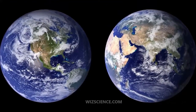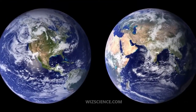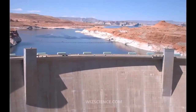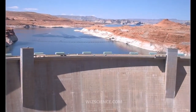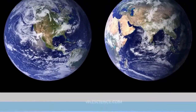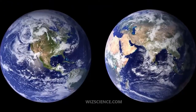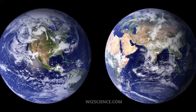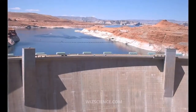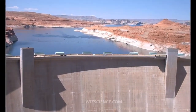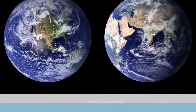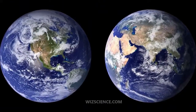Environmental science is a multidisciplinary academic field that integrates physical, biological, and information sciences to the study of the environment and the solution of environmental problems. Environmental science emerged from the fields of natural history and medicine during the Enlightenment. Today it provides an integrated, quantitative, and interdisciplinary approach to the study of environmental systems.